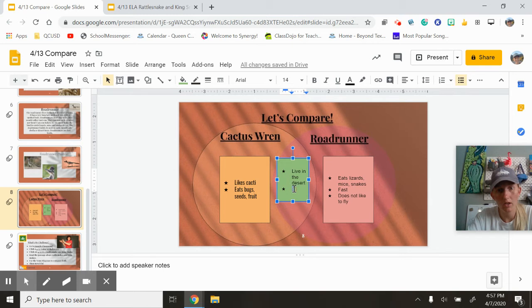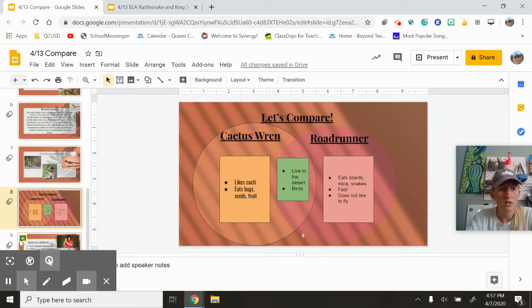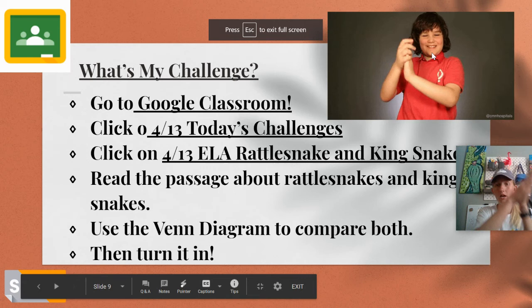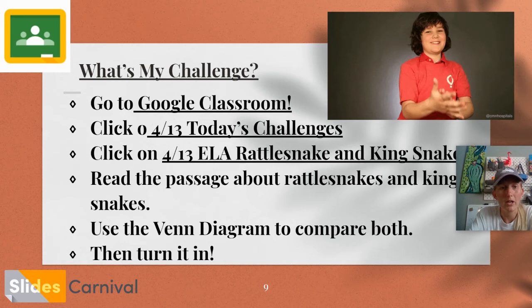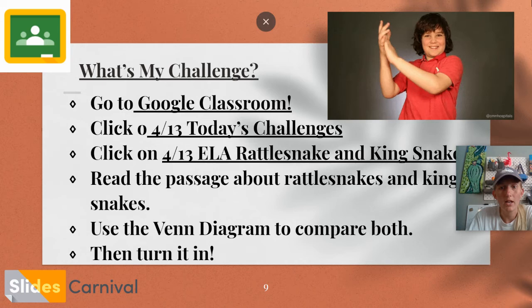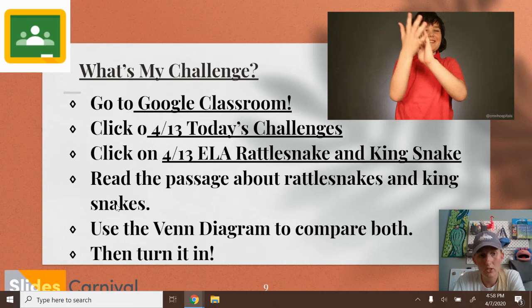I started each one of my bullets with a capital letter and I would suggest that if you're doing bullets you start each one with a capital letter. Remember, you've got what's different on each side and what's the same between both things on the inside of your Venn diagram. Give yourself a round of applause because you made it through that part. You're going to go to Google Classroom and click on 4-13 for today's challenges, then click on 4-13 ELA rattlesnake and kingsnake. Read the passages about rattlesnakes and kingsnakes — there are two of them — and use the Venn diagram to compare both and turn it in.